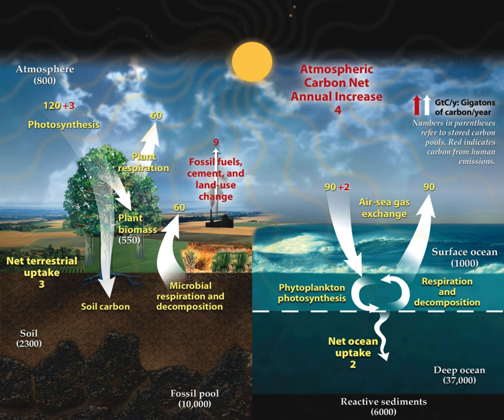These carbon stores interact with the other components through geological processes. The carbon exchanges between reservoirs occur as the result of various chemical, physical, geological, and biological processes. The ocean contains the largest active pool of carbon near the surface of the Earth. The natural flows of carbon between the atmosphere, ocean, terrestrial ecosystems, and sediments are fairly balanced so that carbon levels would be roughly stable without human influence.